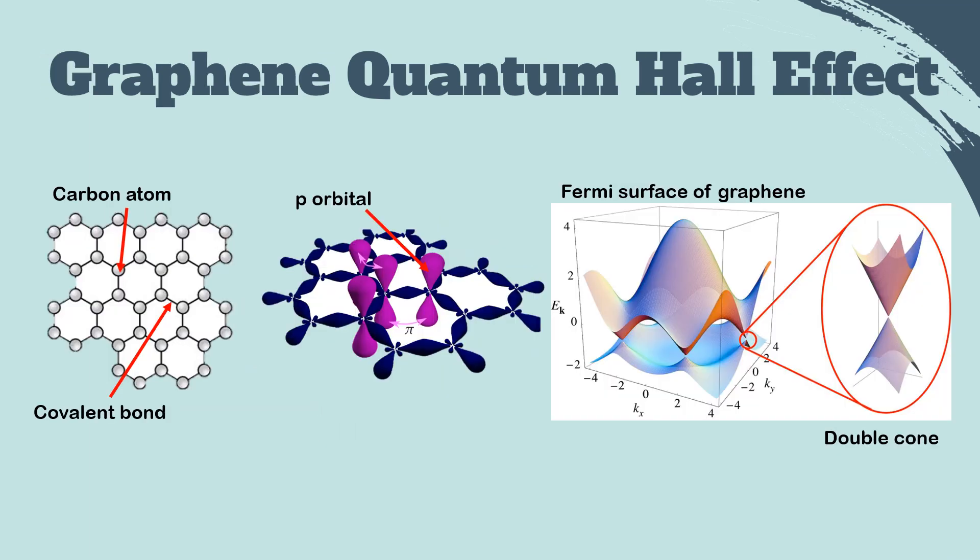Then, how can we apply these phenomena in graphene? Graphene is a single layer of carbon atoms in a two-dimensional hexagonal lattice. The carbon atom bonds to one another via covalent bonds, leaving one 2p orbital electron. Therefore, the result is that the Fermi surface of graphene is characterized by six double cones.